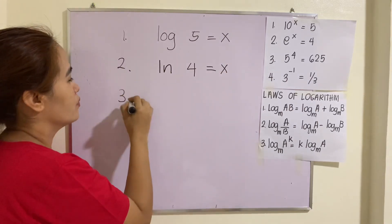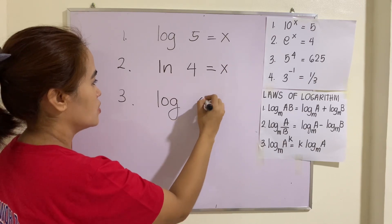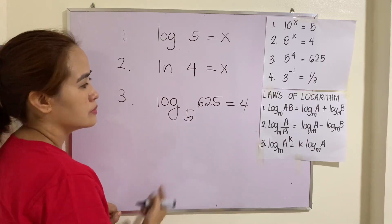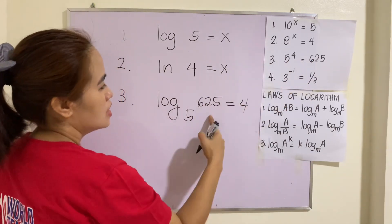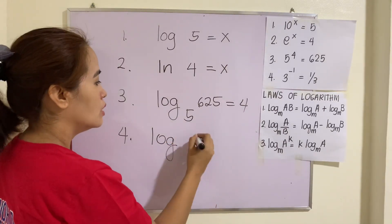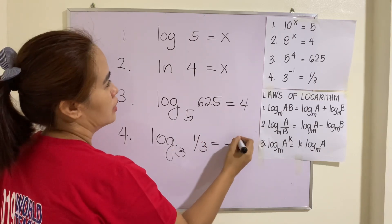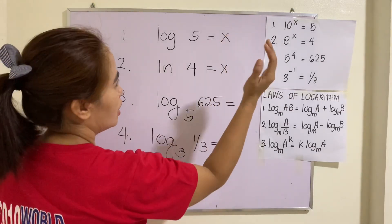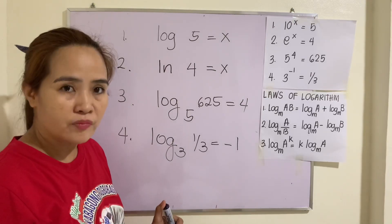Number 3. This one is log_5(625) = 4. Log of the answer to the same base 5 is equal to 4. Number 4. Log_3(1/3) = -1. That's how you translate exponential form into logarithmic form.